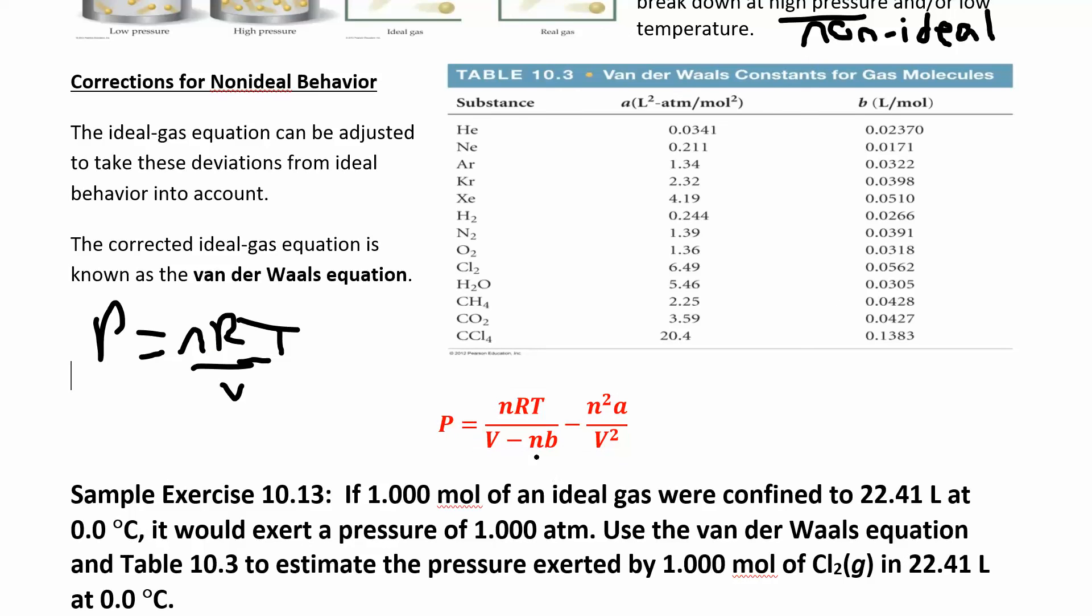This is just NRT over V, and then I'm going to subtract out some NB, where N is the number of moles and B is a constant. It's an empirical constant, so it comes from doing an experiment.